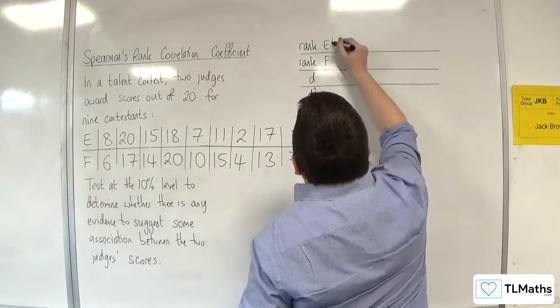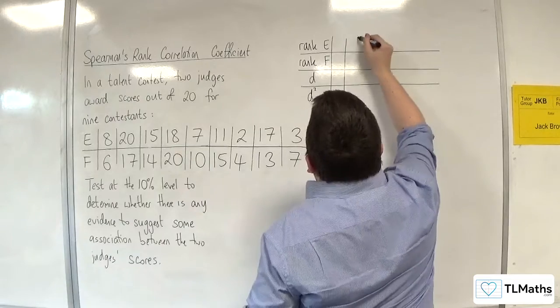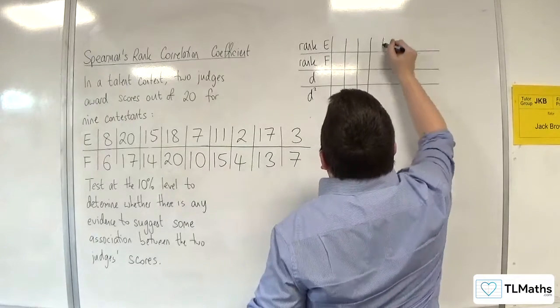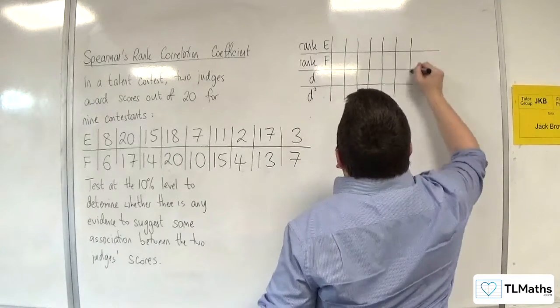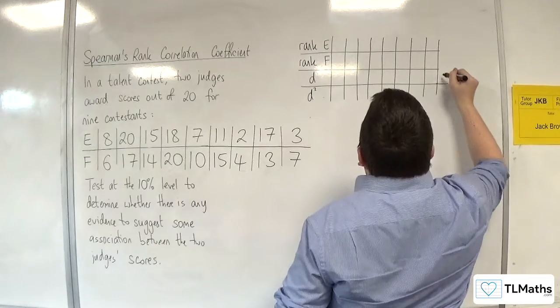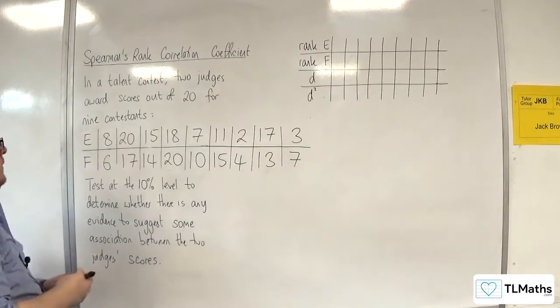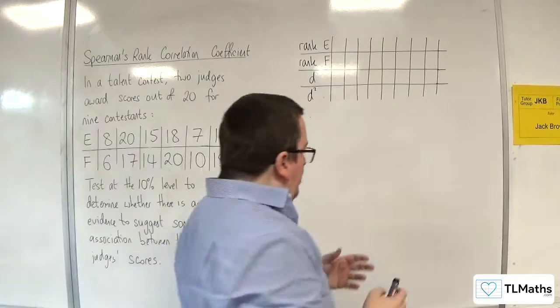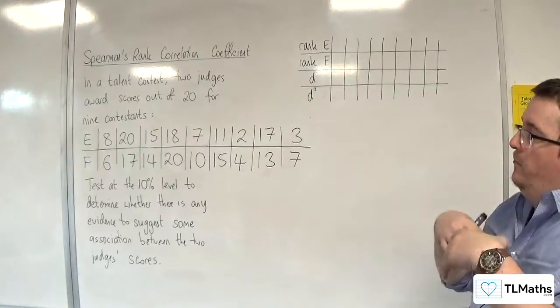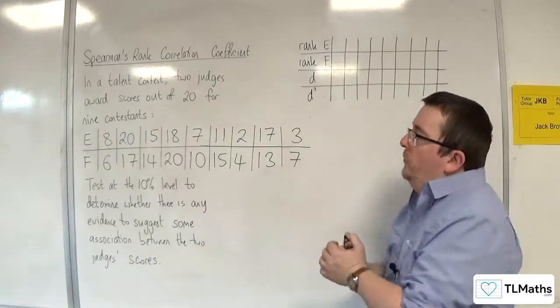Okay, so there are nine contestants: 1, 2, 3, 4, 5, 6, 7, 8, 9. We're going to rank them from the highest score to the lowest score.